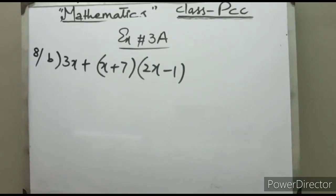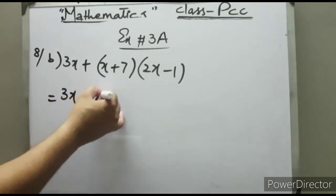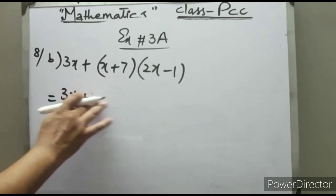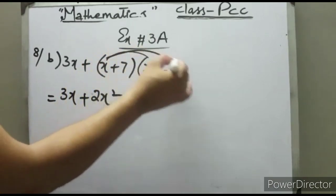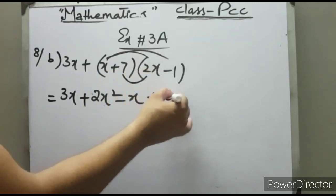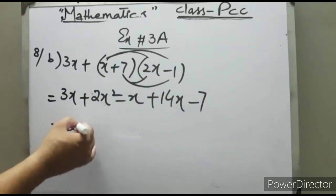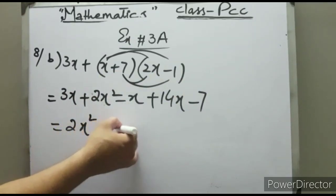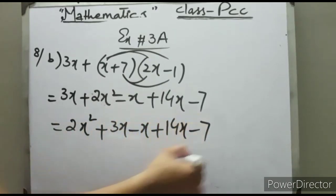Now students, see one more example. This is question number 8 part b. In this question, we have to simplify and expand the expression. 3x multiplied by 2x is 2x², x with -1 is -x, 7 times 2x is 14x, minus 7. Arrange order-wise: 2x² + 3x - x + 14x - 7.